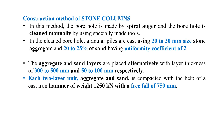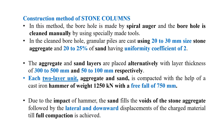Once these two layers are placed, each two-layer unit — that is, aggregate and sand — is compacted with the help of a cast-iron hammer of weight 1250 kN with a free fall height of 750 mm. Due to the impact of the hammer, the sand fills the voids of the stone aggregate, followed by lateral and downward displacement, and we achieve full compaction.